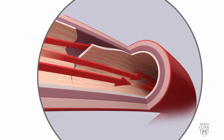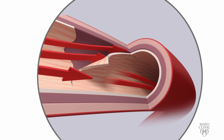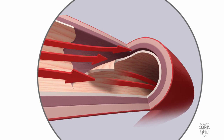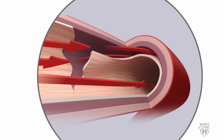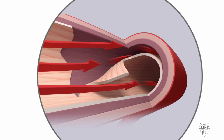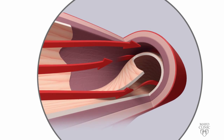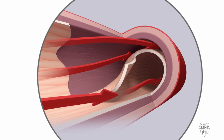A tear develops on the inside of a coronary artery, allowing blood to create a split between two layers of the wall. This may result in a loose flap of tissue on the inside of the artery.